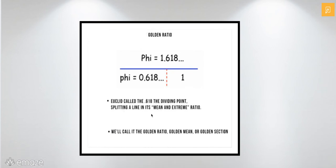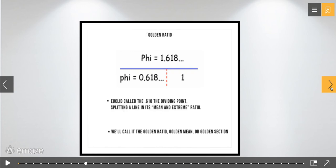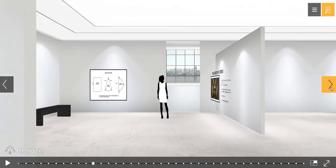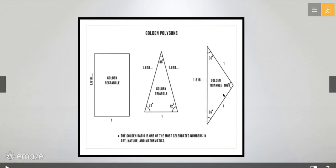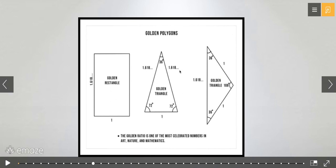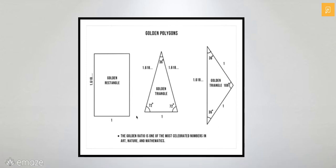Euclid called it the mean and extreme ratio; we call it the golden ratio, golden mean, or golden section — also sometimes the divine proportion. Now that we know mathematically what the golden ratio is, we can create shapes based off it. Here are three shapes: the golden rectangle, and two golden triangles, both isosceles in nature — meaning two equal angles and two equal sides. For the golden rectangle, the length divided by the width must come out to 1.618 or 0.618.